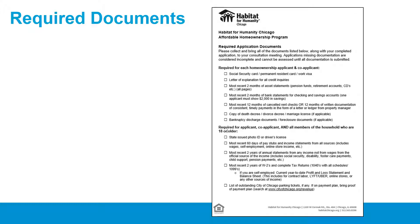There are two lists of items on this handout. The top one lists all of the documentation you and your co-applicant need to supply — this section only applies to you and your co-applicant if you have one. The second list, right below the first, lists the documentation you, your co-applicant, and any household members who are 18 and older need to supply. Household members included here are only those who will live in your future home and are 18 or older at the time of application submission. Follow this checklist as you collect your documentation and double-check to make sure you have all applicable items by your consultation date.